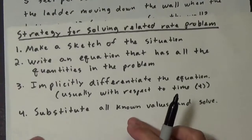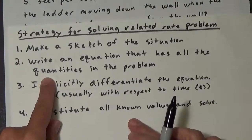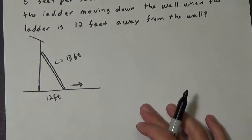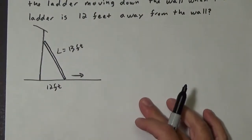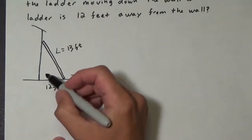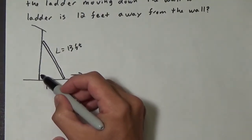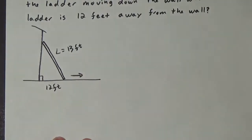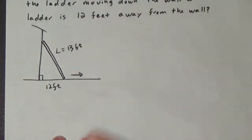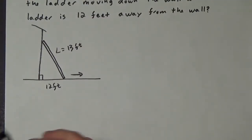Step two is we want to write an equation that has all the quantities in the problem. Sometimes it's easy, sometimes it's not so easy. This one's not so bad because when we think of a building, usually we can assume that that's a right angle. And if this is a right angle when you look at the side of the house, the ground, and the ladder, we end up with a right triangle.